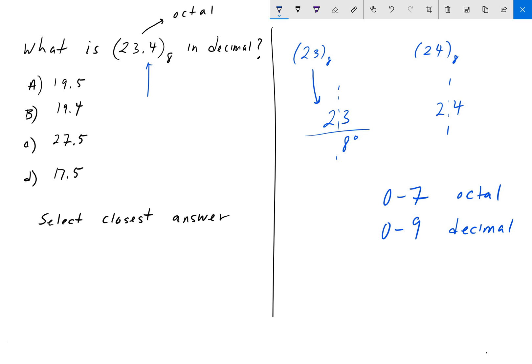We would then multiply 3 times 8 to the 0, which is 3, and then do the same for the next set of digits. 2 times 8 to the 1. 8 to the 1 is 8, 8 times 2 is 16.